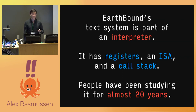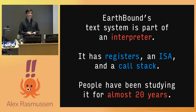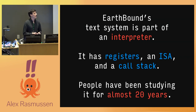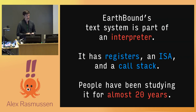EarthBound's text system actually forms part of an interpreter that's effectively embedded into the game itself. This interpreter has registers, it has an instruction set, it has a call stack. It's remarkably sophisticated for a game that had to fit on an 8 megabyte ROM cartridge. What's even cooler is that people on the internet have been looking at the guts of EarthBound and studying this interpreter for almost 20 years — the work on this started in the very early 2000s.